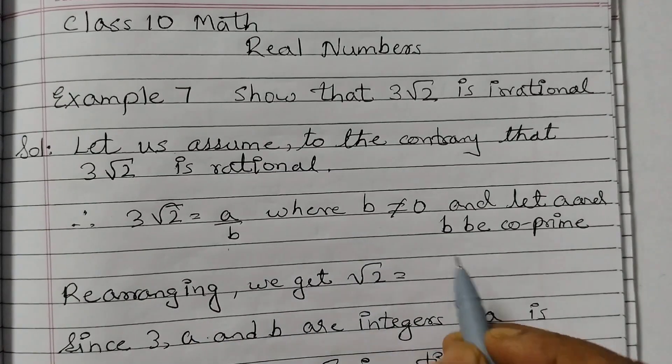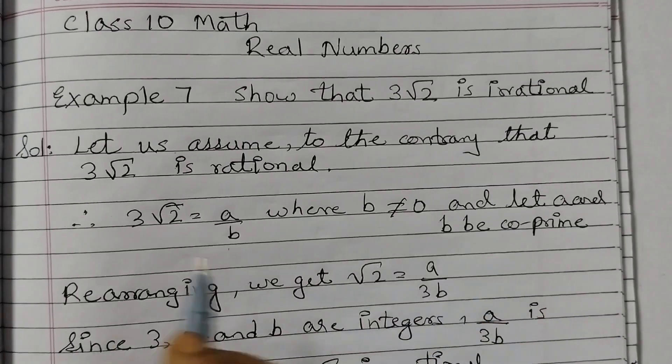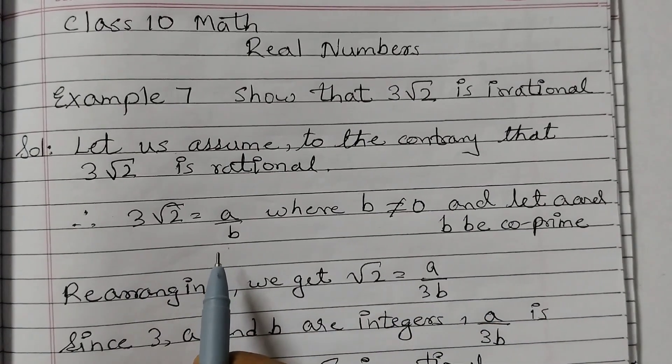Rearranging, we get that square root of 2 is equal to A upon 3B. I am taking this 3 down here, so it becomes A upon 3B.